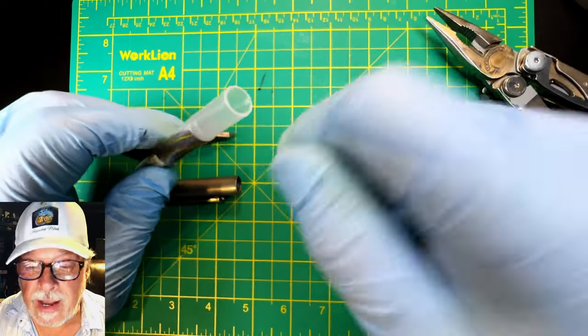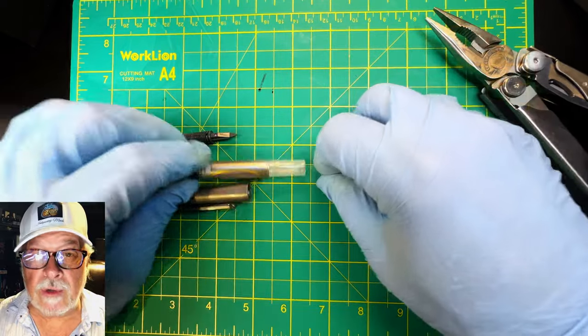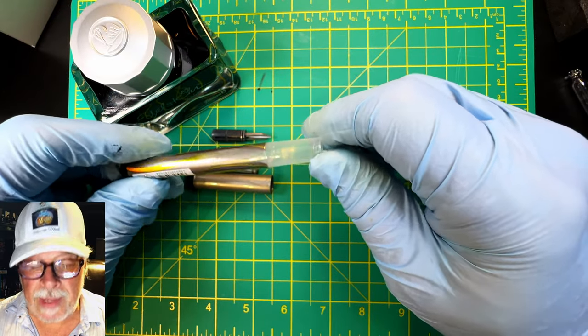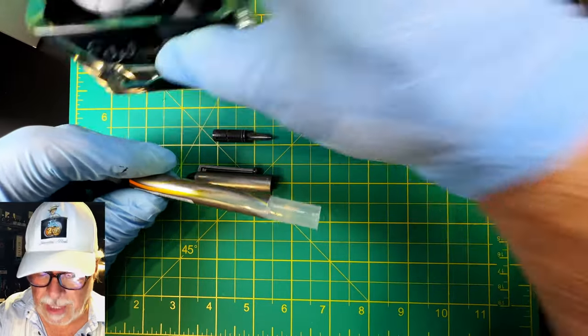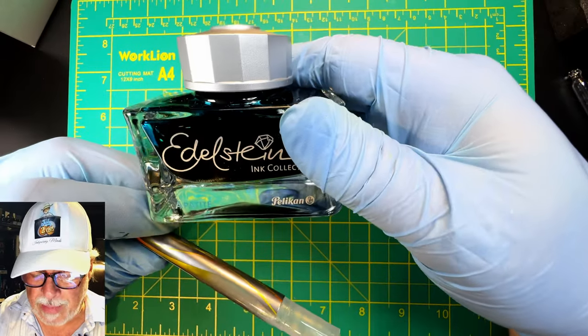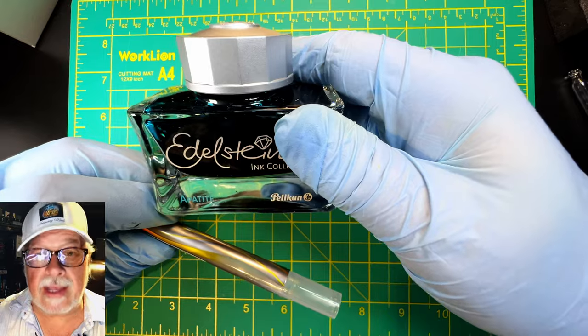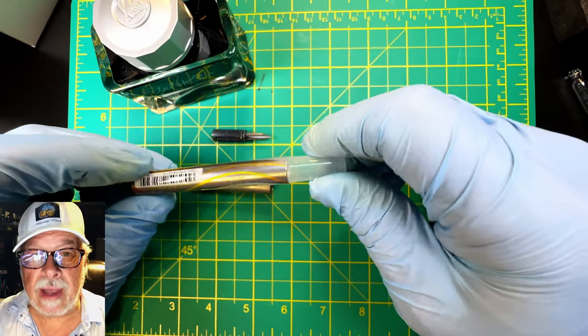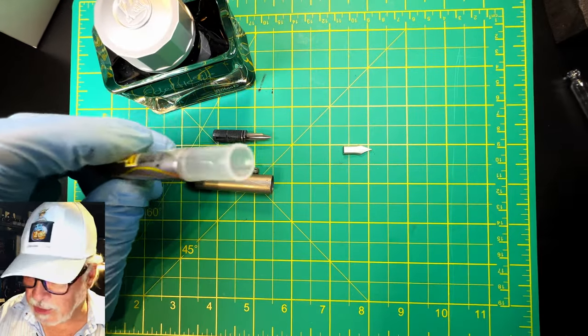So one of the nice things about using one of these disposable pens as an eyedropper is you get to choose the ink that you want, and here I've chosen the Pelican Edelstein ink of the year Appetite as a nice vibrant emerald green. And you don't even need a syringe to do this, just an ordinary everyday eyedropper you can get from the drugstore.